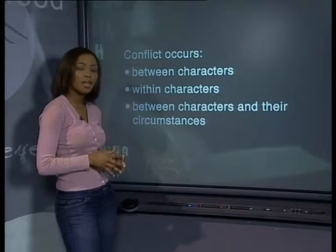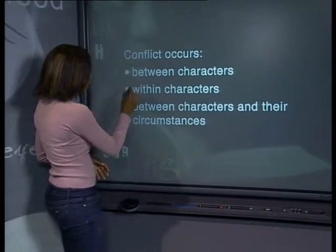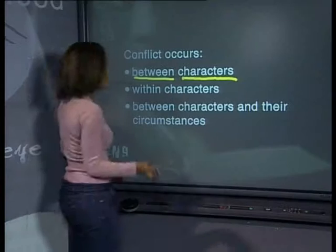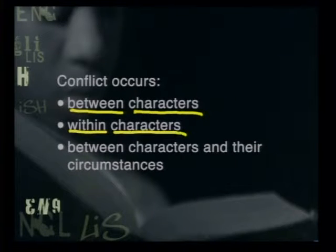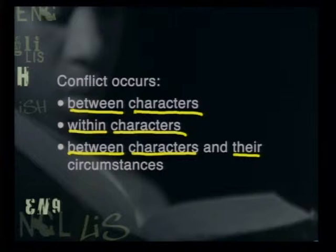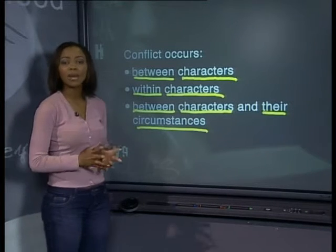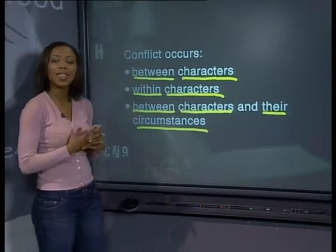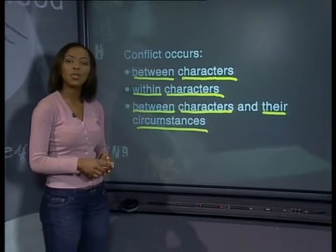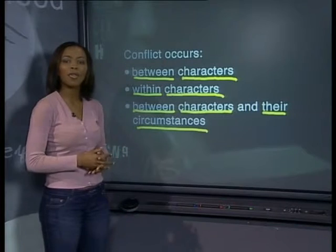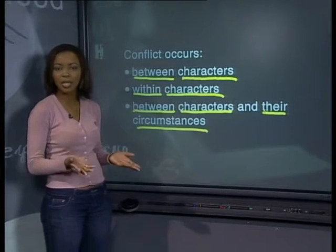At the start of this lesson, we said that there are three types of conflict: between characters, within characters, and between characters and their circumstances. Now let's think about conflict that occurs within characters. When you are studying literature, you always need to be able to back up the claim you're making with evidence from the text. Let's look for references in The Suit that indicate struggles that go on within the characters' own minds. These examples of conflict are not as obvious as the conflict between two characters — in this story, as in most good stories, this conflict happens below the surface.